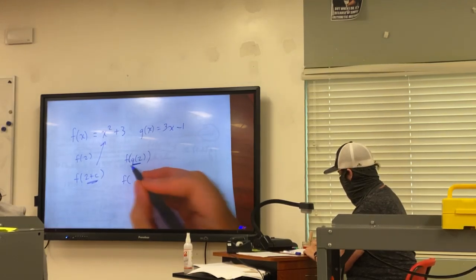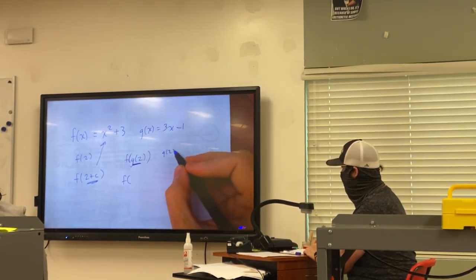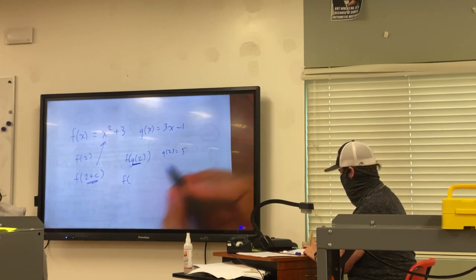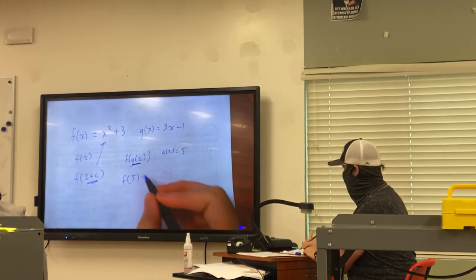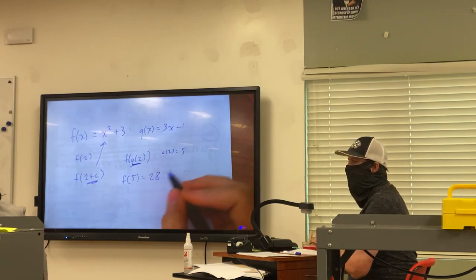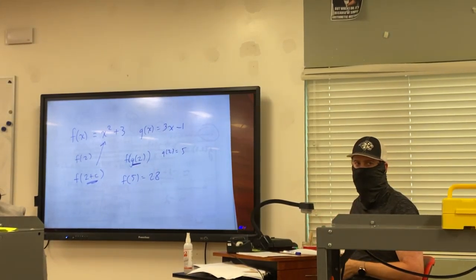So f of g of 2, I could do off on the side. 6 minus 1 is 5. So then f of 5. 5 squared is 25 plus 3 is 28. Do we kind of remember that from summer?